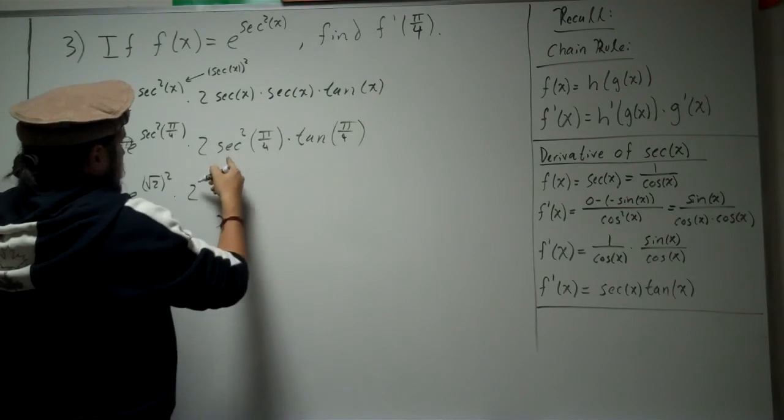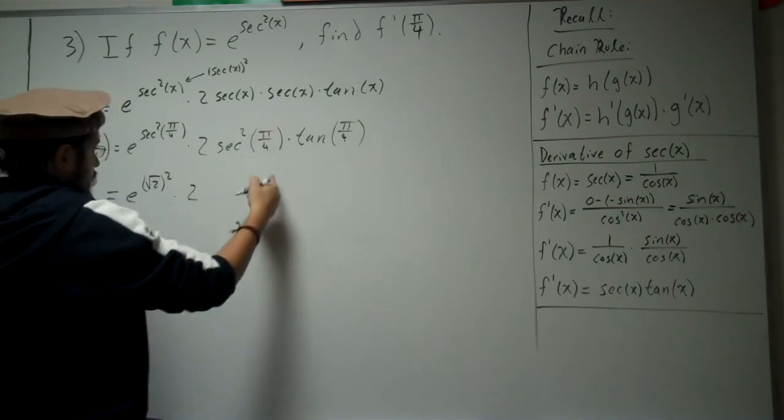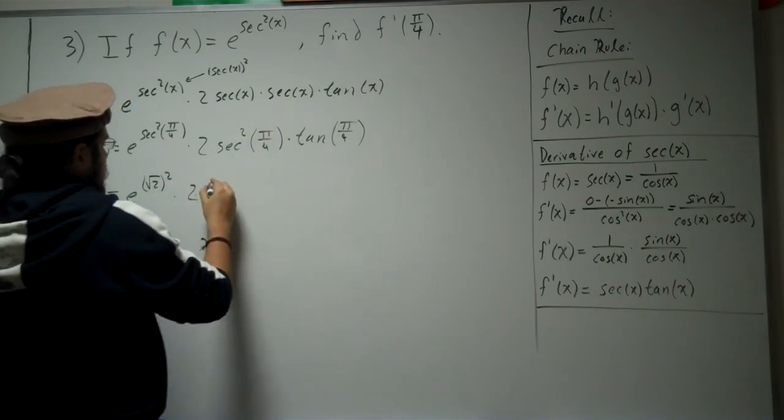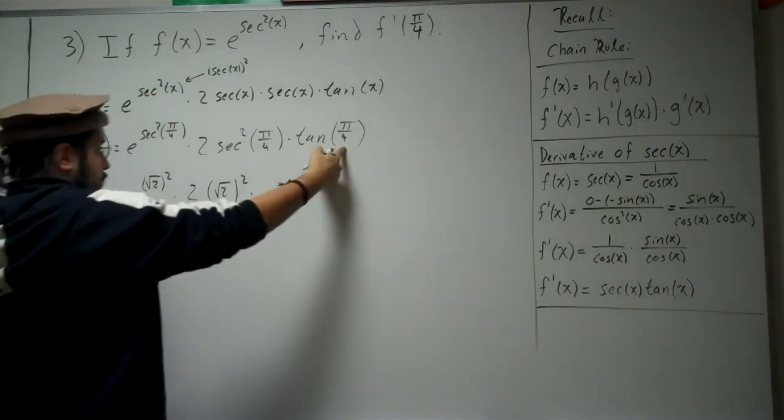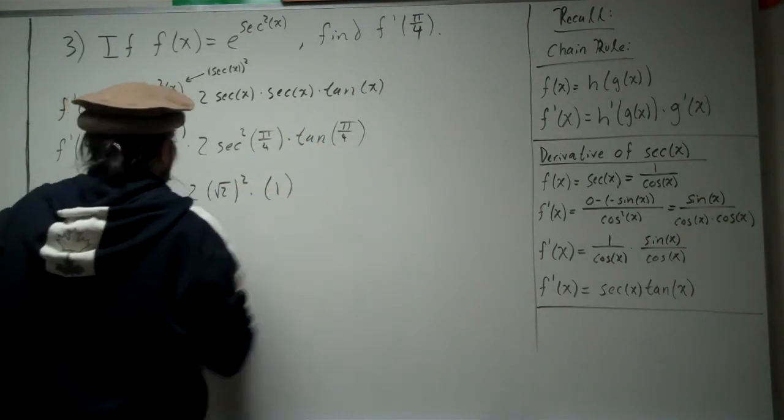Times 2. Secant of pi over 4 is also square root of 2. Same thing. So that's going to be square root of 2 squared. Times, now, the tangent of pi over 4 is 1. So that's just 1. Okay.